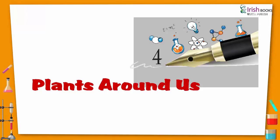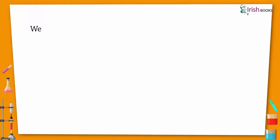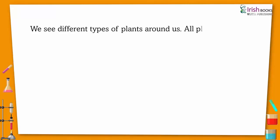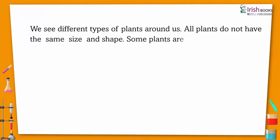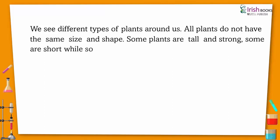Plants around us. We see different types of plants around us. Our plants do not have the same size and shape. Some plants are tall and strong, some are short while some are weak.